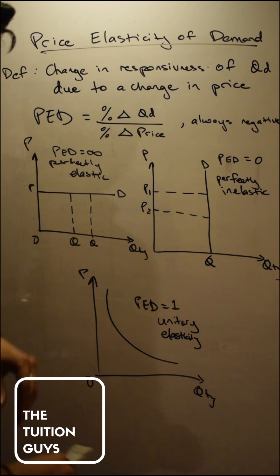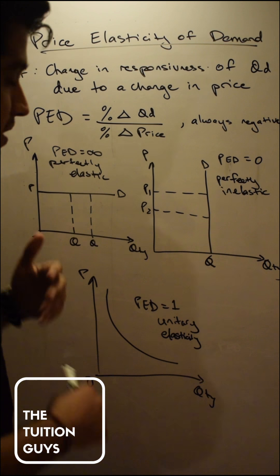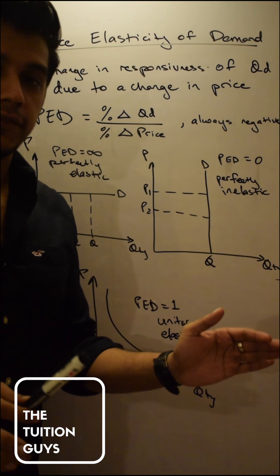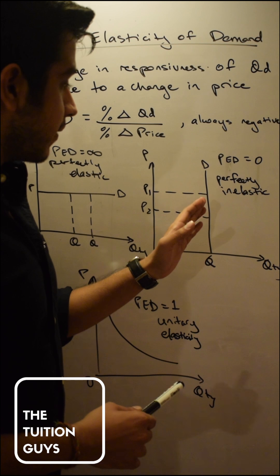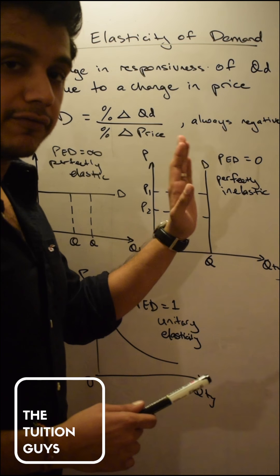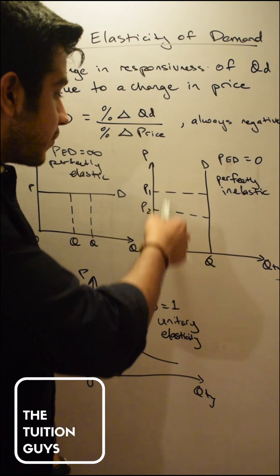All right, as price changes, I'm done. I have no demand of that product. In a perfectly inelastic demand curve, that means that my demand curve is perfectly or completely vertical. My PED is going to be equal to zero and that means I care as price fluctuates.